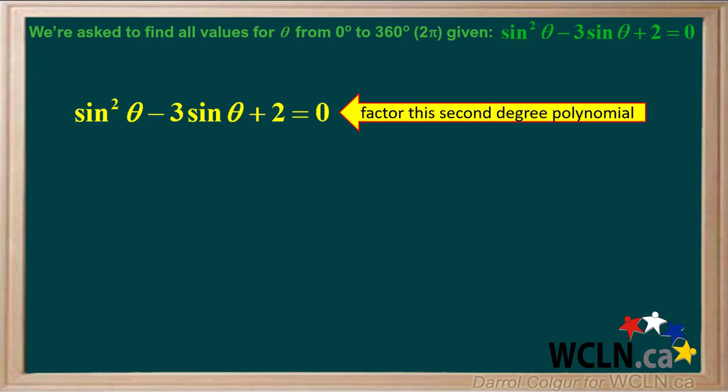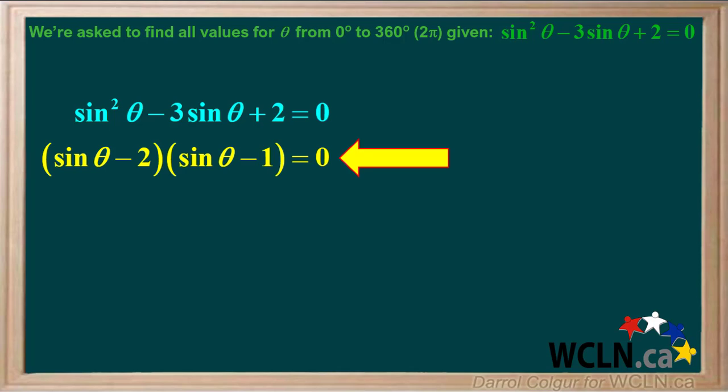This is a second degree polynomial, or a quadratic, and it can be easily factored. Factoring this gives us sine theta minus 2 times sine theta minus 1 equals 0.